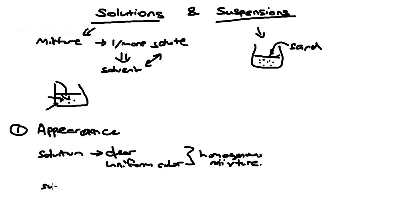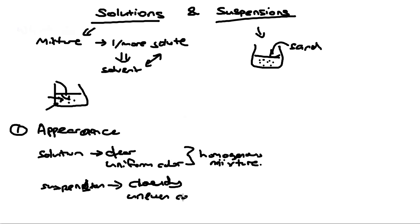For a suspension, you tend to see that it is cloudy and the colour is usually uneven. We call these types of mixtures heterogeneous mixtures. This is the first way you can tell between a solution and a suspension.